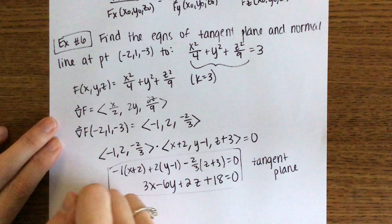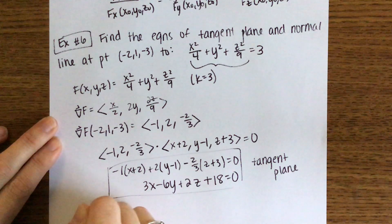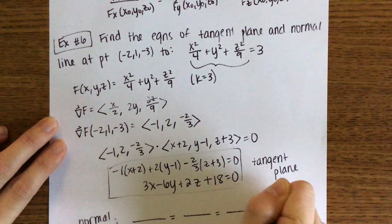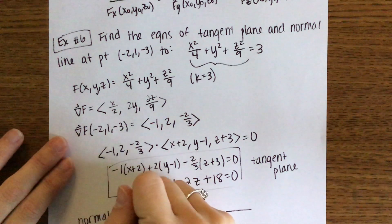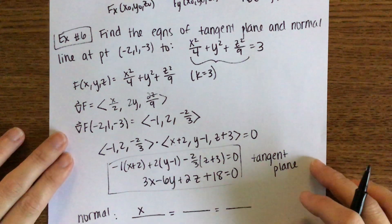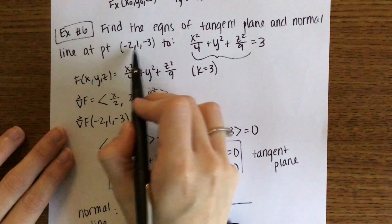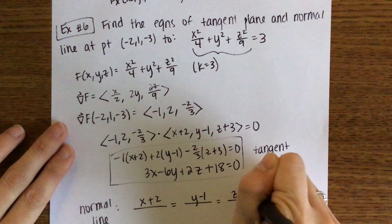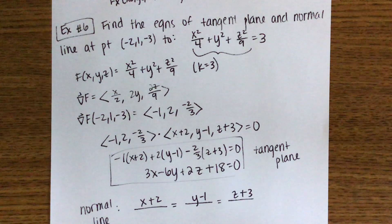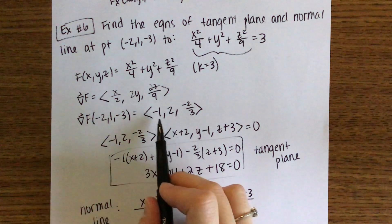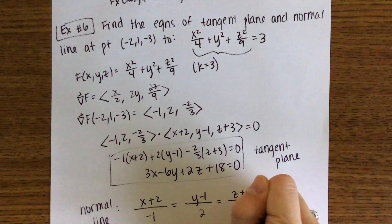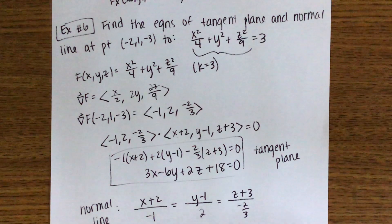For the normal line, we use the symmetric form with point (−2, 1, −3) and the gradient components (−1, 2, −2/3): (x − (−2))/(−1) = (y − 1)/2 = (z − (−3))/(−2/3). That is the equation of the normal line.